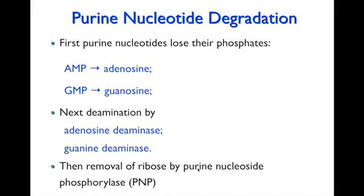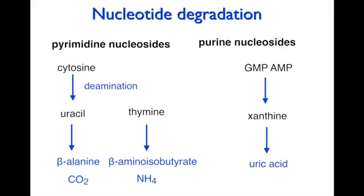Then we have the removal of ribose by the enzyme purine nucleoside phosphorylase. This flow diagram shows that pyrimidine nucleosides are broken down to beta-alanine, carbon dioxide, beta-amino isobutyrate, and NH4. We don't tend to have problems with metabolic disorders with pyrimidine nucleosides because these are fairly soluble. Beta-alanine and beta-amino isobutyrate can also be metabolized — beta-alanine is transaminated and then converted to acetyl-CoA, which can enter the TCA cycle and be used to synthesize lipids.